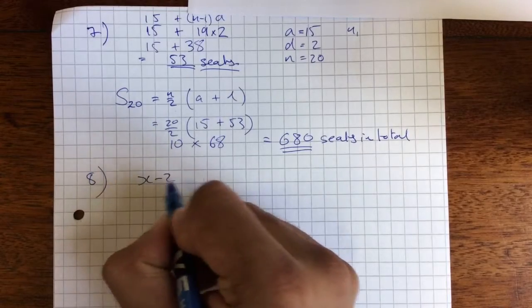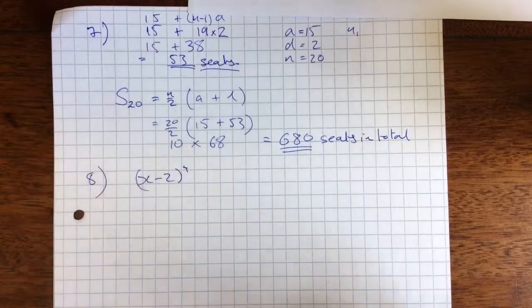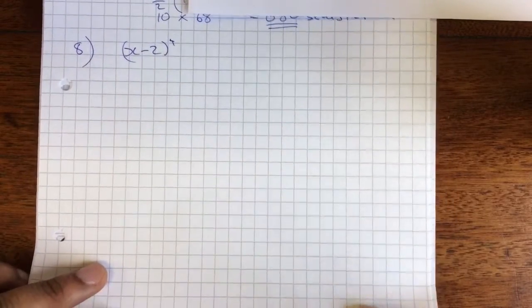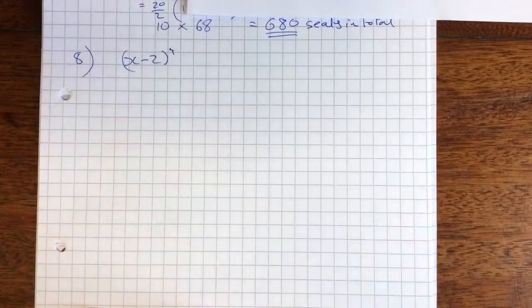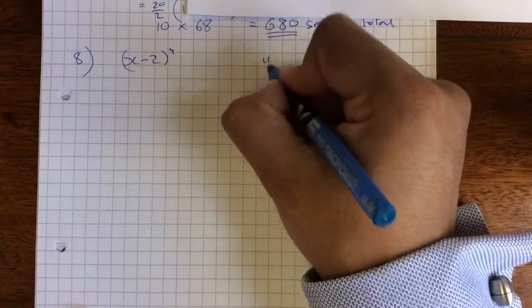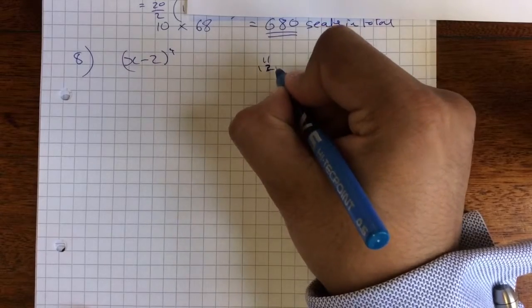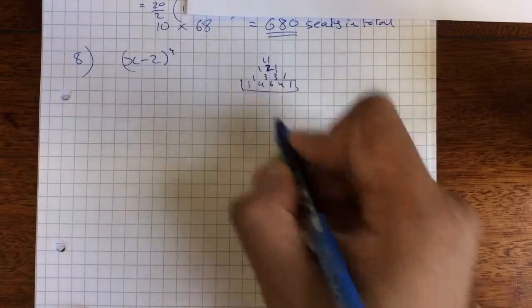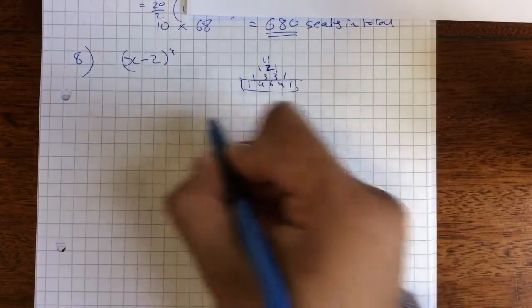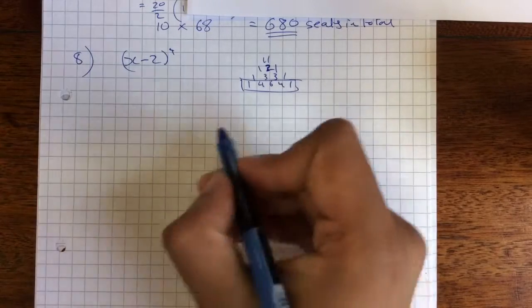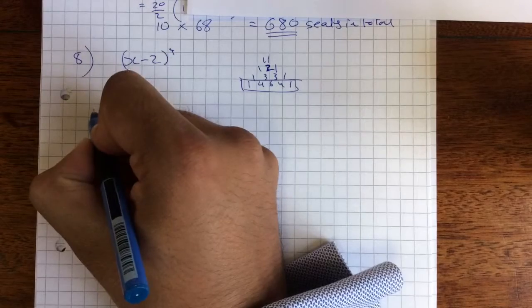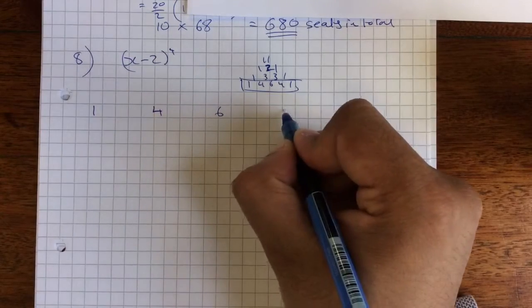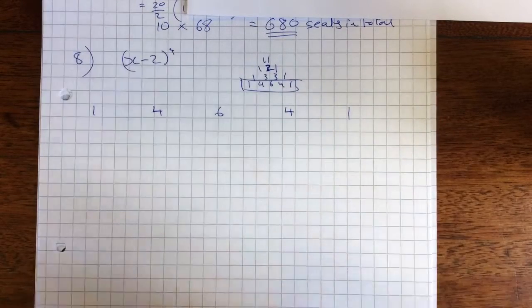Good. (x minus 2) to the power of 4. And simplify, so first thing is power of 4, coefficients, Pascal's triangle. I'm going to use Pascal's triangle for this: 1, 1, 1, 2, 1, 1, 3, 3, 1, 1, 4, 6, 4, 1. That's what I'm going to use: 1, 4, 6, 4, 1. If you don't remember it, that's how you figure it out. Or you can, if it's a calculator paper, you could use NCR, but it's a bit laborious. So 1, 4, 6, 4, 1. I've got my coefficients.